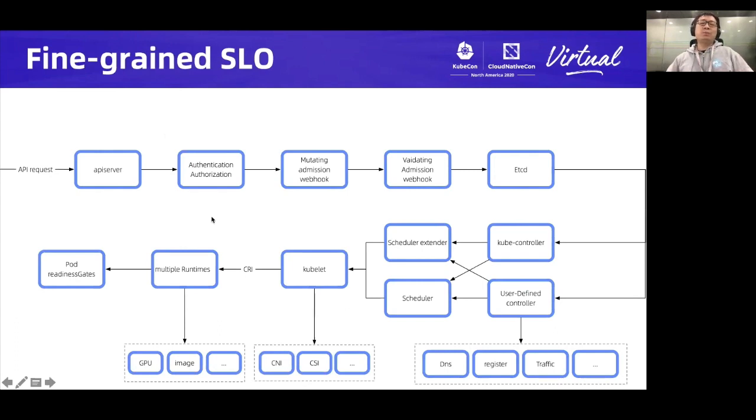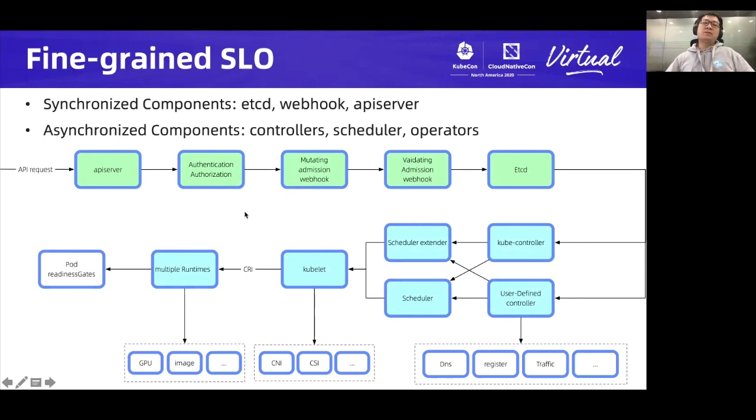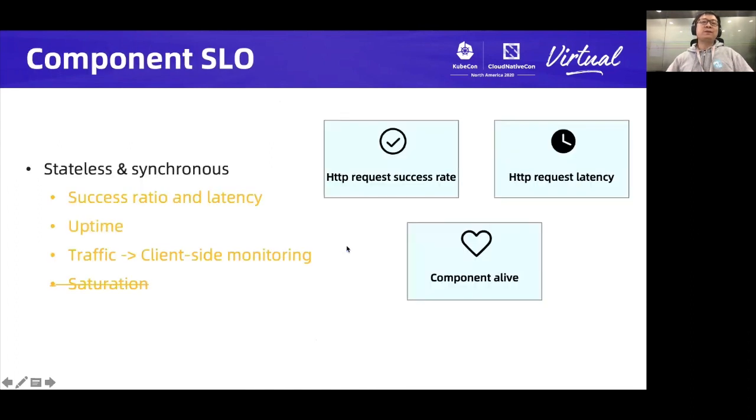To take a step back, let's revisit the flowchart of the pod creation. Although we have tens of components in this graph, we actually can model them in two types, namely synchronous components and asynchronous components. For synchronous components like API server, etcd, and validating webhook, their interaction model is more straightforward. Get request in, process internally, and send the response out. For asynchronous components, just like scheduler, controller, or custom operators, their interaction model is more like the classical list and watch pattern and intent driven. They need to watch resource status change, then enter the reconcile queue, and do the reconciliation repeatedly.